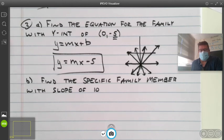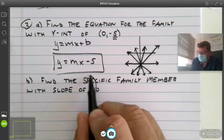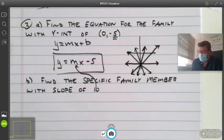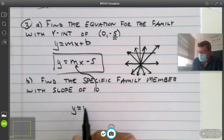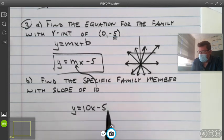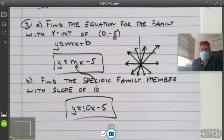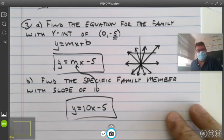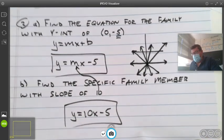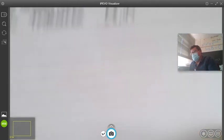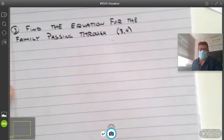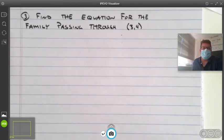Let's go on with part B. Find the specific family member with slope ten. You just throw it in there. Y equals 10x minus five. And you are done. Hopefully, if you have any questions, make sure that you email me and I will email you back. Or we'll talk about it in class the next time we meet.